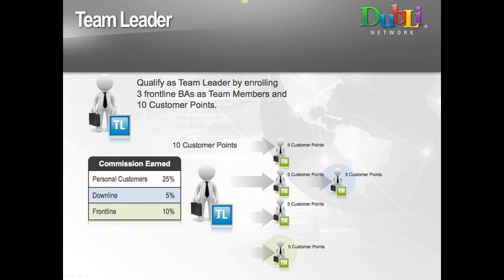Once we've personally enrolled three people who selected the $495 package — all titled team member — we get our first promotion to team leader. As team leader, we pick up an additional 5%, so our aggregate total capability doubles from 5% to 10%. We earn 10% on any new business we start, and 5% on business that matures and grows. If you started with the TLA package, you actually start at team leader position right away, earning 10% even on the first few people you enroll.